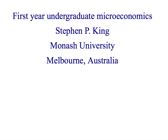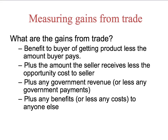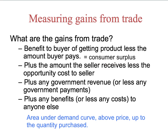Welcome back to First Year Microeconomics. We've been looking at welfare economics, and so far we've looked at how to measure the gains from trade for a buyer. The benefit to the buyer of getting the product, less the amount the buyer pays, is the buyer's consumer surplus from the trade. In the last presentation, we saw that we could use a simple rule: it's the area under the individual buyer's demand curve, above the price the buyer pays, up to the quantity that the consumer purchases.